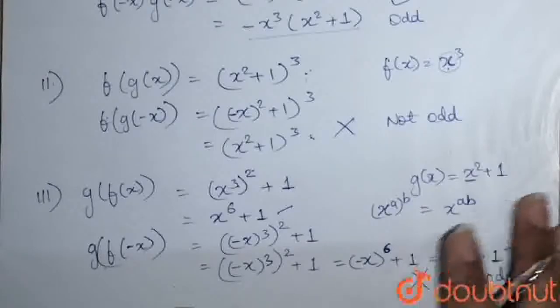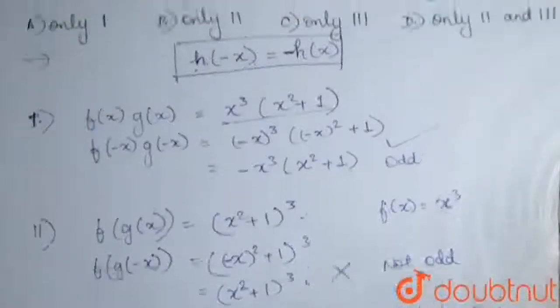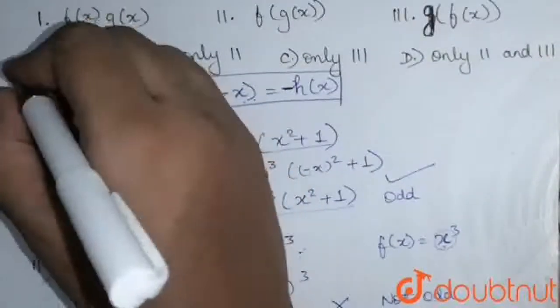So our odd function here is only first one. So the correct option is A.